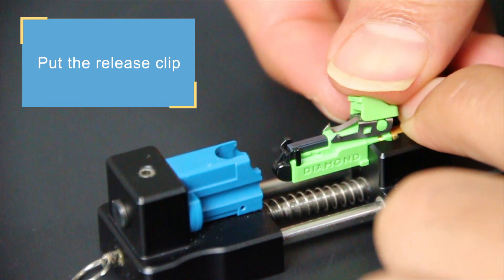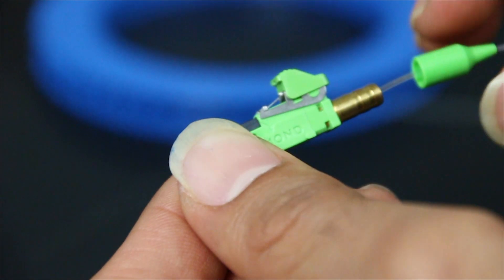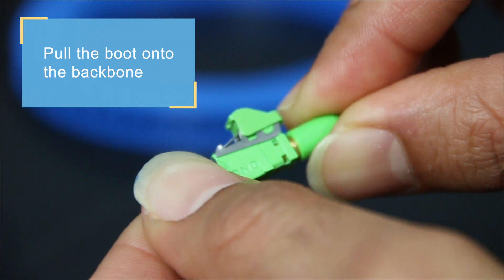Put the release clip on the connector. Pull the boot onto the backbone until the flange of the connector.